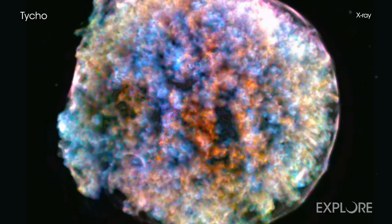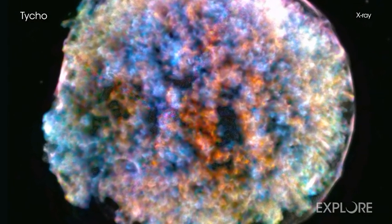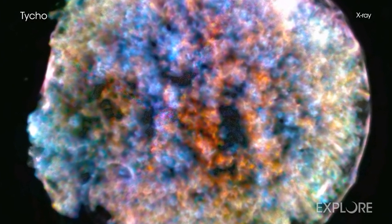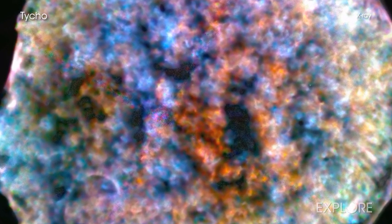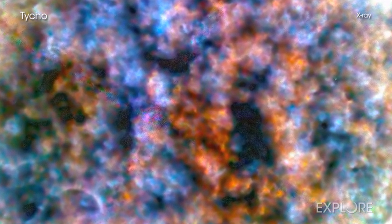In the Tycho supernova remnant, Chandra reveals an intriguing pattern of bright clumps and fainter holes. What caused this thicket of high-energy knots in the aftermath of this explosion? Did the explosion itself cause this clumpiness, or was it something that happened afterward?